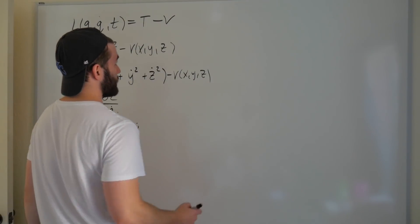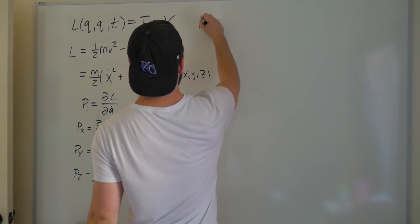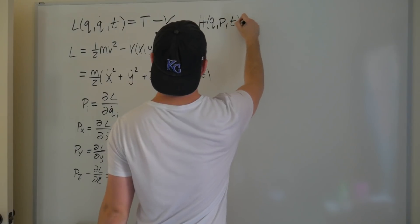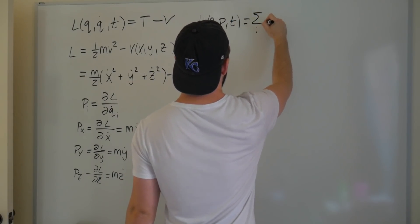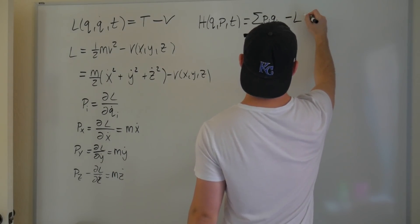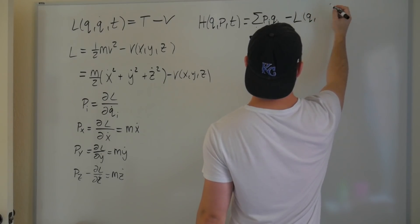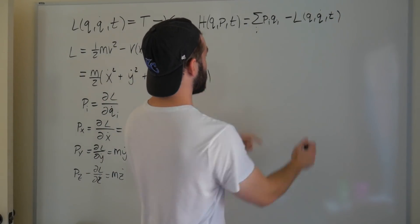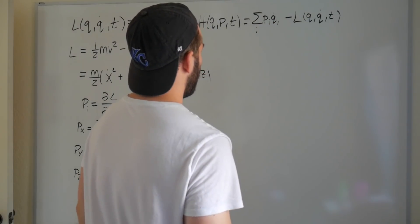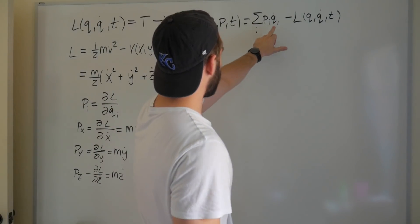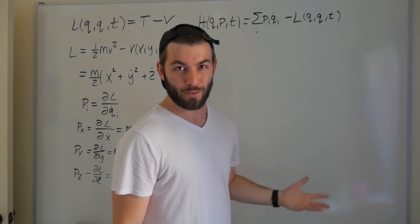Now, let's go ahead and write down what the expression is for a regular Hamiltonian. The Hamiltonian, as a function of q, p, maybe some t, is equal to the sum over i of pi qi dot, so it's like a dot product, minus the Lagrangian as a function of q, q dot. Don't let this fool you. We see qi's. This should actually be a qi dot.